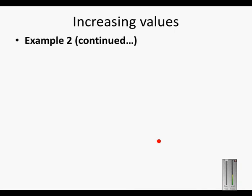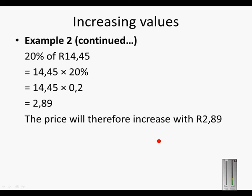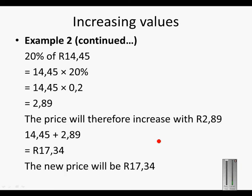Let's quickly go over it again. If there is a 20% increase in the petrol price of R14.45, we first calculate what 20% of 14.45 is by multiplying 14.45 with 0.2, which gives us 2.89. If we increase the price by 2.89, we get 14.45 plus 2.89 equals 17.34. So the new price after the petrol price has increased by 20% is R17.34.